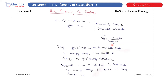Density of states is basically the number of electrons per unit volume. If we are talking about the states, then it is the number of states per unit volume, which is said to be the density of states.